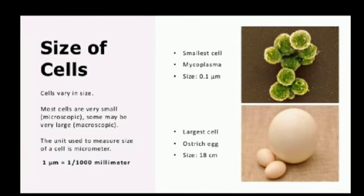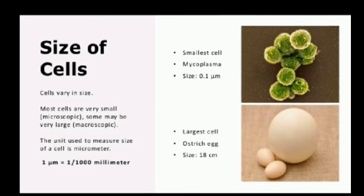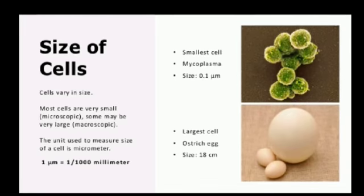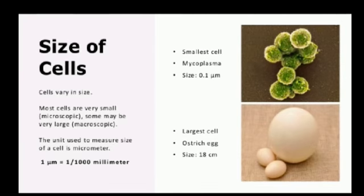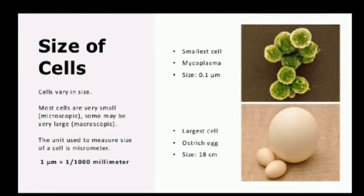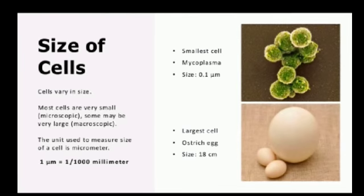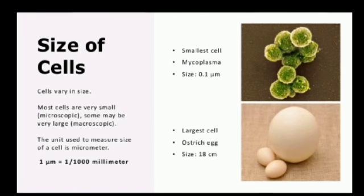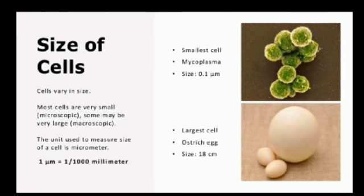The unit used to measure the size of a cell is the micrometer. The smallest cell is mycoplasma, which is a type of bacteria, and its cell size is 0.1 micrometer.